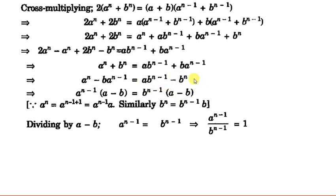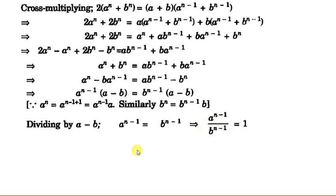Since a is not equal to b, we can divide both sides by (a minus b), leaving a^(n-1) equals b^(n-1). Transposing, we get (a upon b) to the power (n minus 1) equals 1. We can write 1 as (a upon b) to the power 0, since the base on the left is a upon b. Therefore n minus 1 equals 0, giving n equal to 1/2.